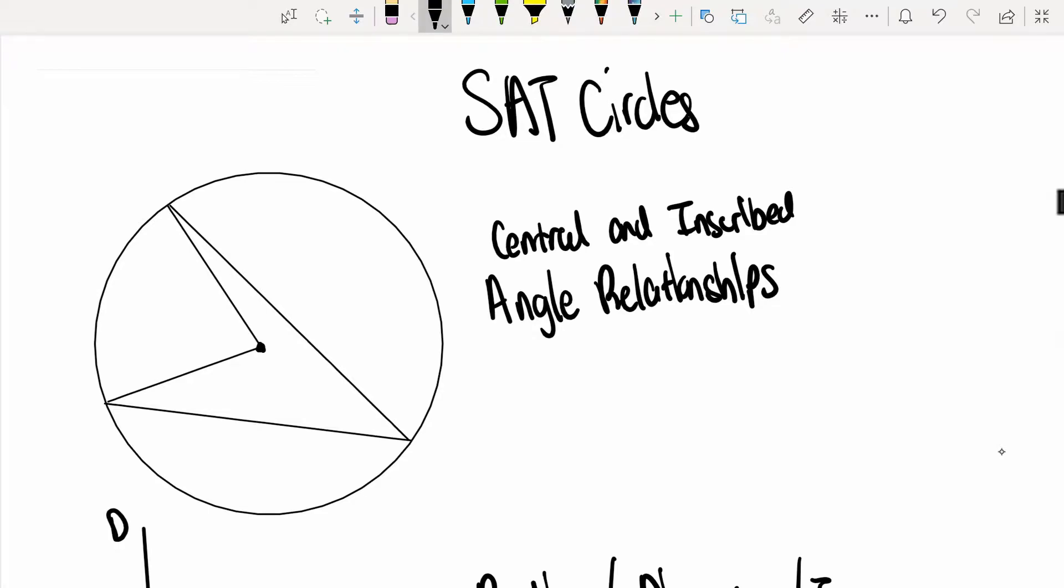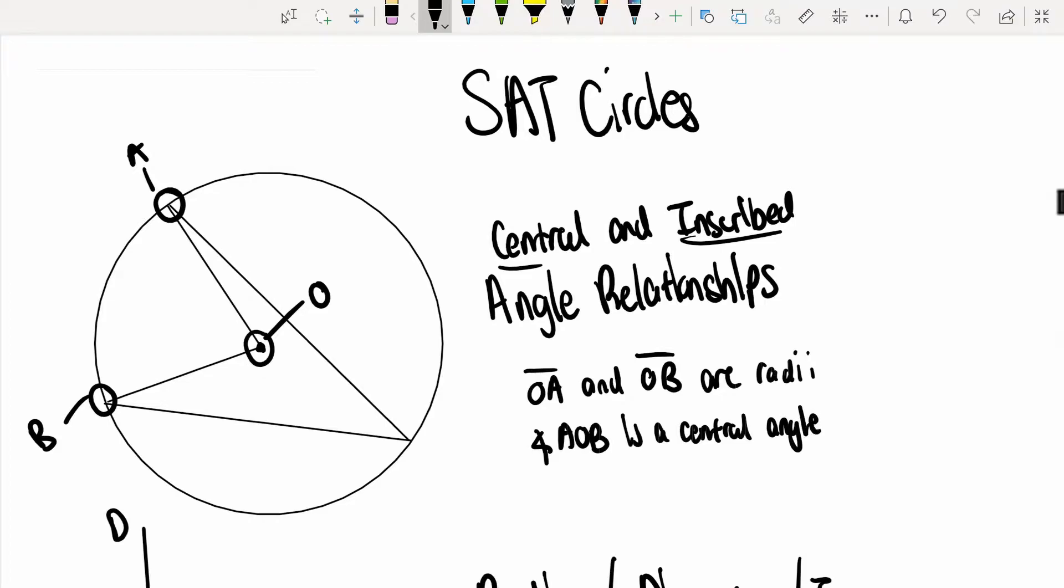Without further ado, let's begin. The first thing we're going to cover is the idea of central and inscribed angles. A central angle is formed when two radii pass through the center of the circle. If we have this center point O, and we have point A and point B, we see that OA and OB are radii, and the gap between them also forms an angle. Angle AOB is a central angle.